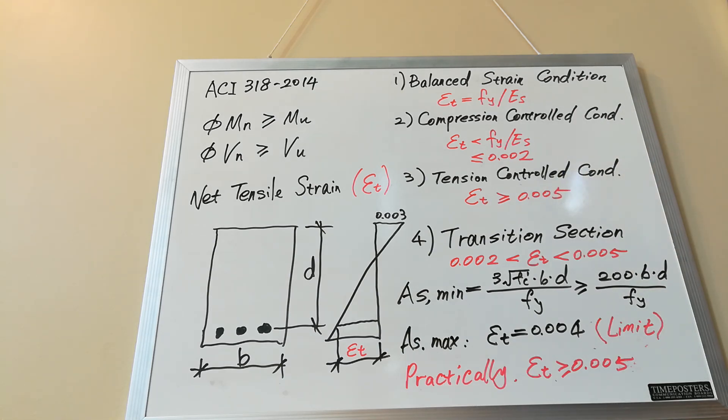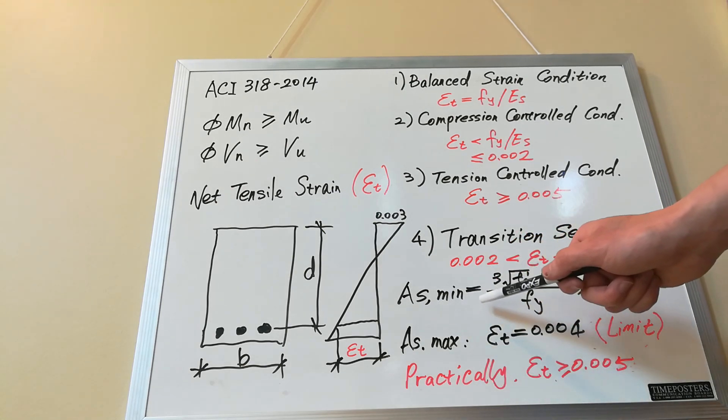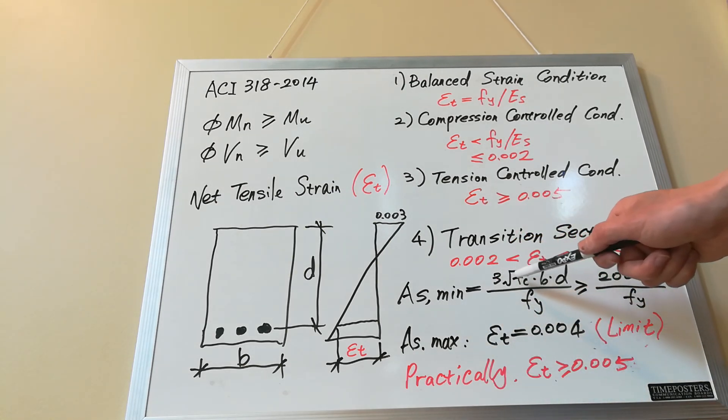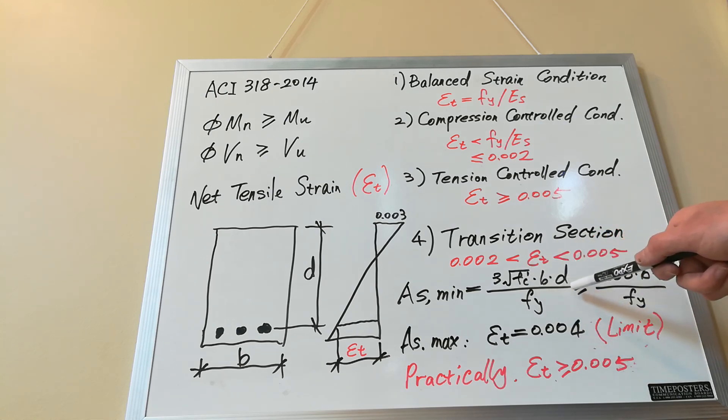Now next we are going to talk about the minimum and maximum steel area. According to ACI 318, the minimum tension steel area required As equals 3 times square root fc prime times b times d divided by fy. Here fc prime means the concrete strength, b is the width of the section, and d is the effective depth of the section. Fy is the steel yielding strength. At the same time, it has to be greater than 200 times b times d divided by fy.